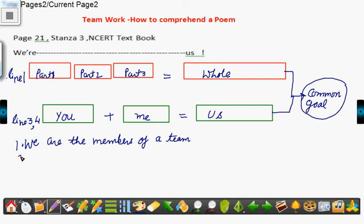Line 2nd we leave it right now. Line number 3 and 4 can be written in one simple sentence, you and me make us. So in the poem it says that you and me make a team.